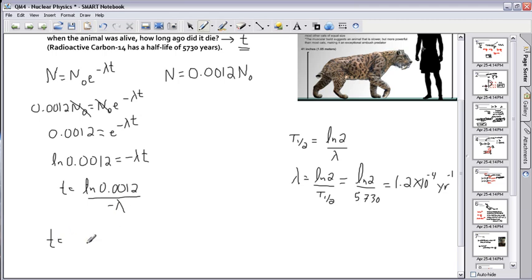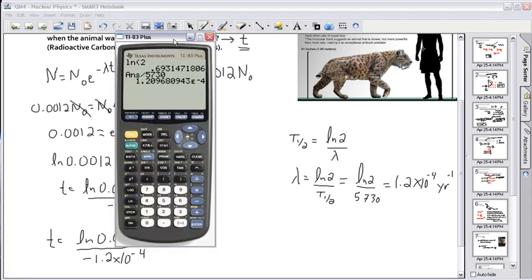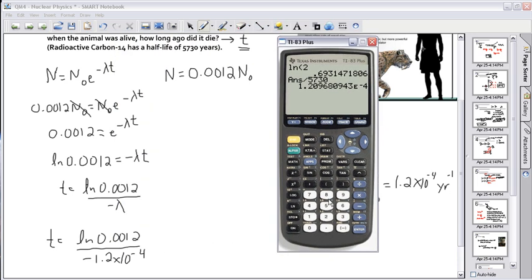So I take that and I put it here, in this equation here. So now I have ln of 0.0012, divide that by negative 1.2 times 10 to the minus 4. So I'll do that on my calculator, just to be absolutely sure we know how to do this.